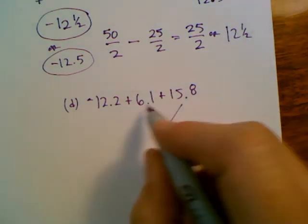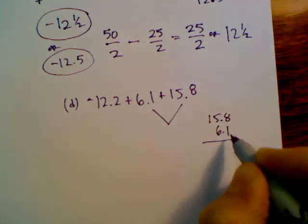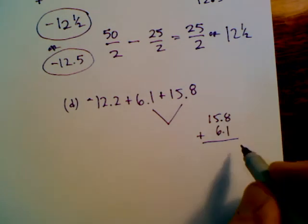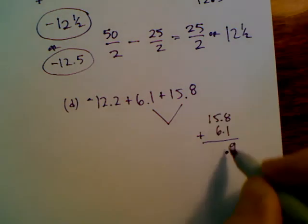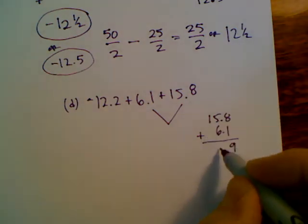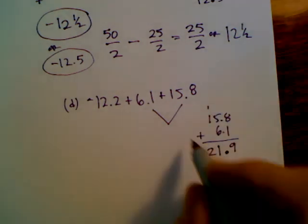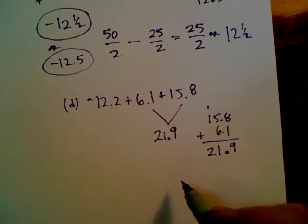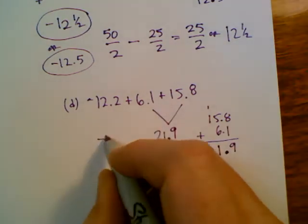And when you're adding decimal values, remember the algorithm or the method of adding is to line up your decimal place and then add using your addition algorithm. So 8, 1, 9, the decimal drops straight down in line, and then we've got 11 carry the 1, there's 2. So 21.9 or 21 and 9 tenths is the addition of the positive values.